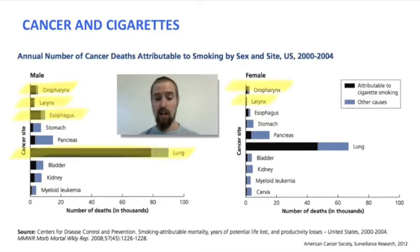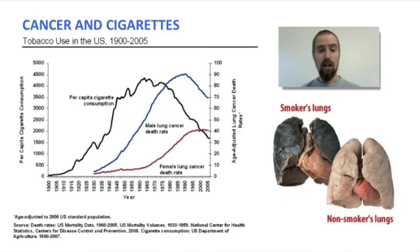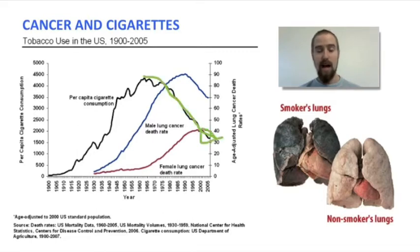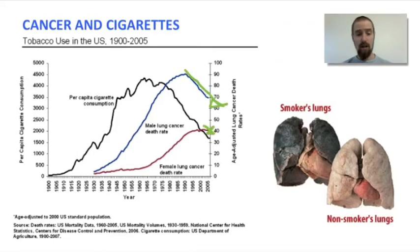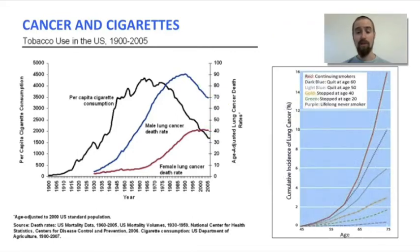Fortunately, as we can see in this graph, the number of people who smoke tobacco in the United States is on the decline, and has been since the 1970s. As a result, the number of cases of lung cancer in males and females is also starting to drop. It is also important to note that it is never too late to quit smoking.